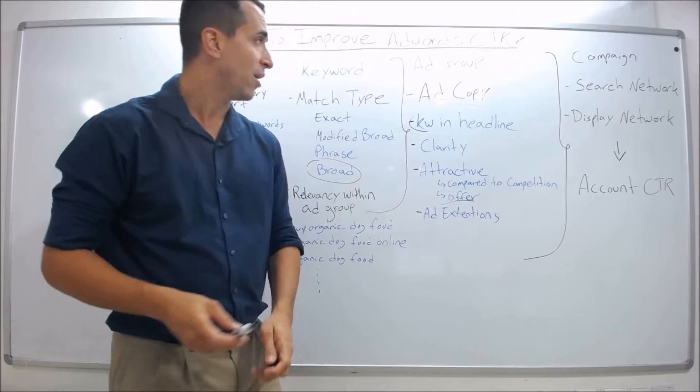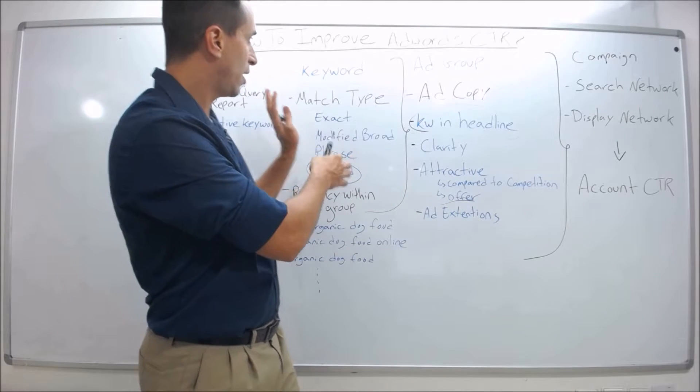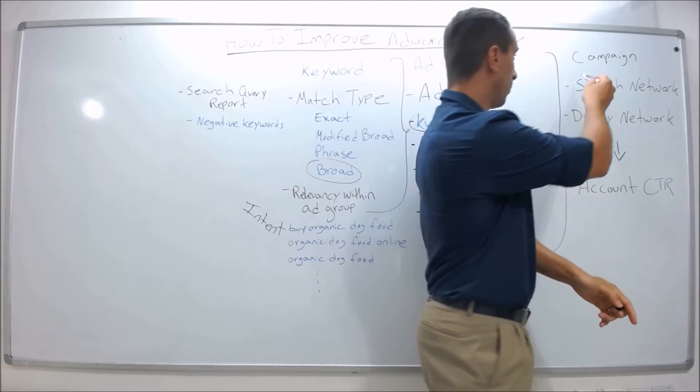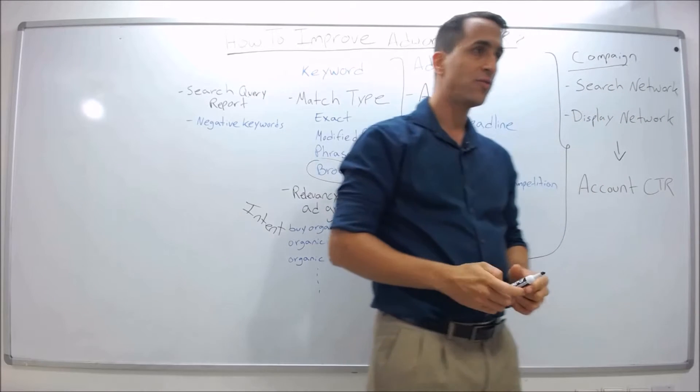So these three things - the keywords optimized to the ad group. The ad group aggregates up to the campaign level. As you get to the campaign level, there are two factors that affect it.